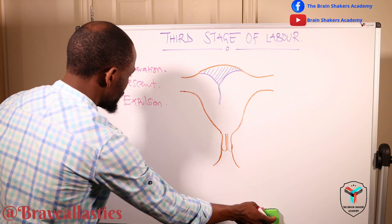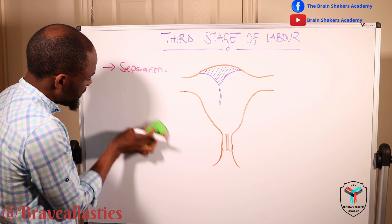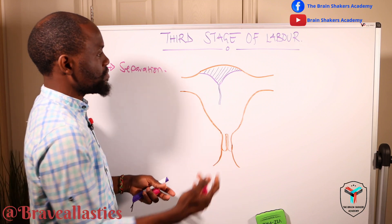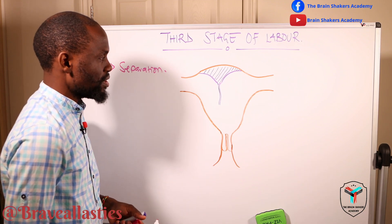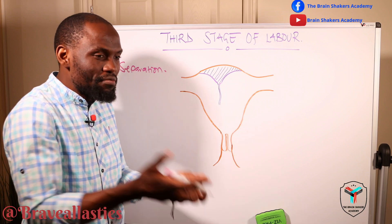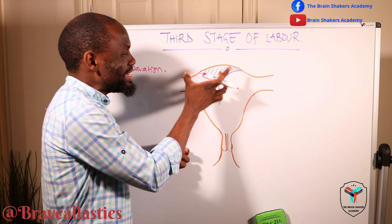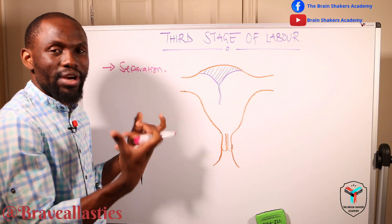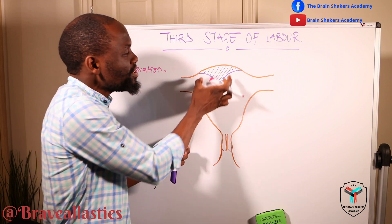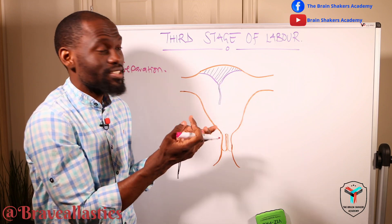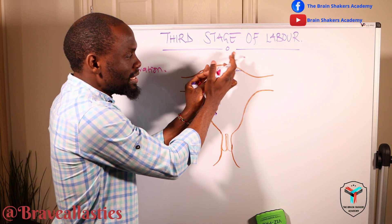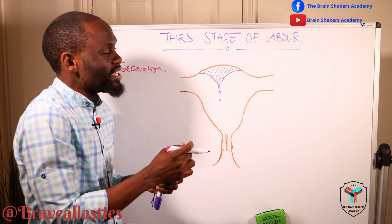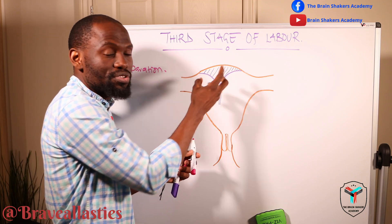Now, let's quickly look at the separation process. With separation, there are a number of ways in which it is going to occur, and we'll be looking at two important methods. With the baby now having been delivered, the uterus will still continue to contract. The contraction effect on the myometrium, which is elastic, contrasts with the placenta, which is inelastic and incompressible. What is going to happen is a reduction in the placental site, and that reduction will force the placenta to detach.